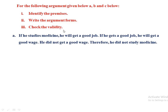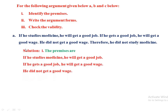He did not get a good wage, therefore he did not study medicine. Now we identify the premises: 'if he studies medicine he will get a good job,' 'if he gets a good job he will get a good wage,' and 'he did not get a good wage.' The conclusion is: he did not study medicine.